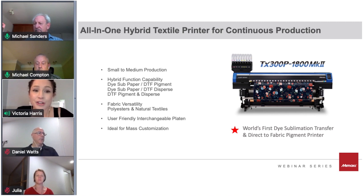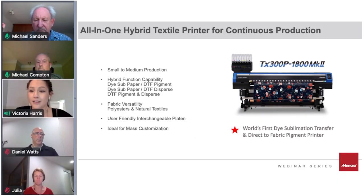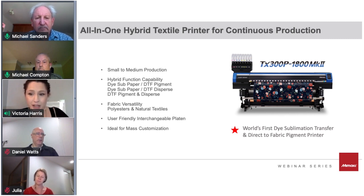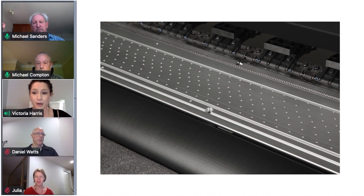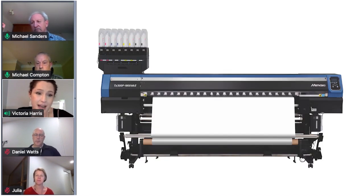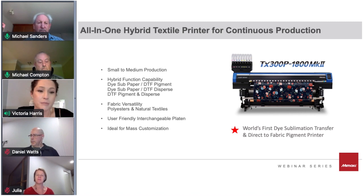Here we share technologies best suited for this type of production. The TX300P-1800 Mark II is the world's first combined dye sublimation transfer paper printer and direct-to-fabric pigment printer. It handles small to medium production and gives you the versatility to print directly to fabric with pigment inks using a dual ink system, and then switch to sublimation transfer paper by easily changing out a platen — a pop-and-play system. This machine allows end users to print on polyesters and natural fibers with the highest quality and is ideal for mass customization.